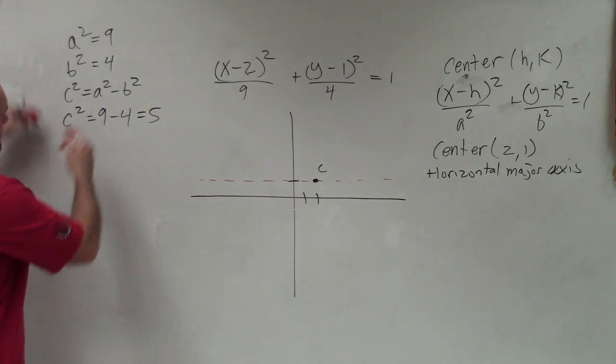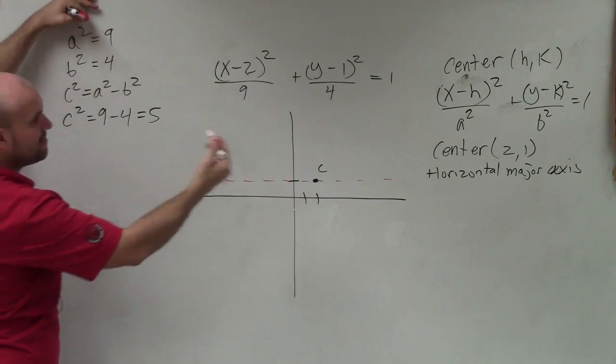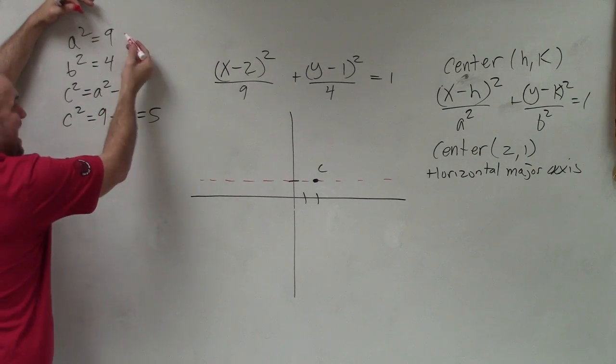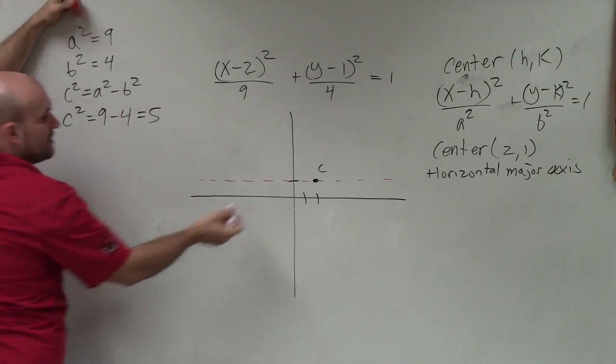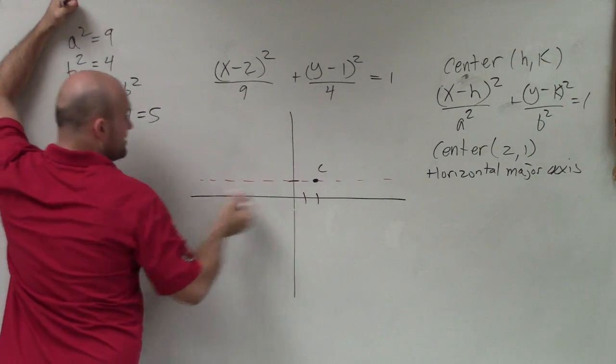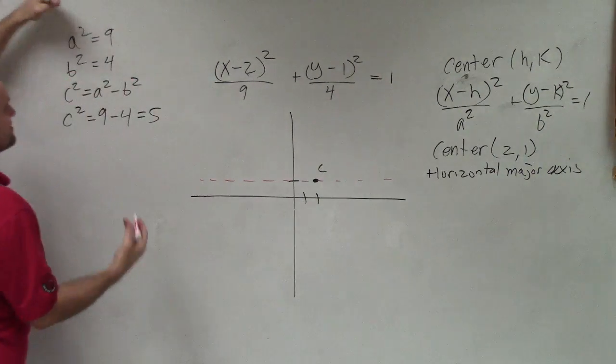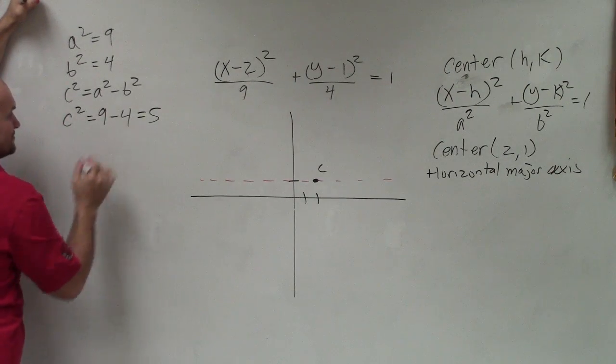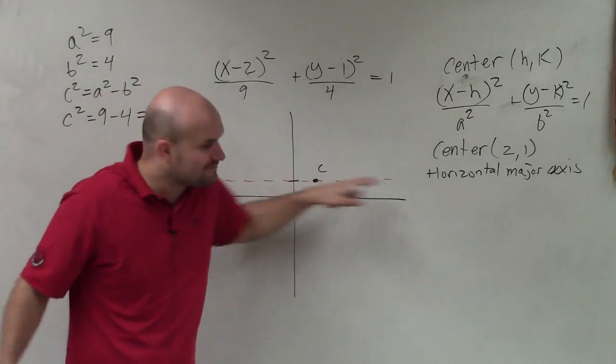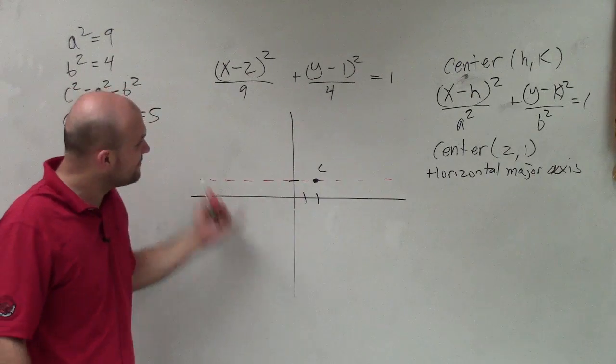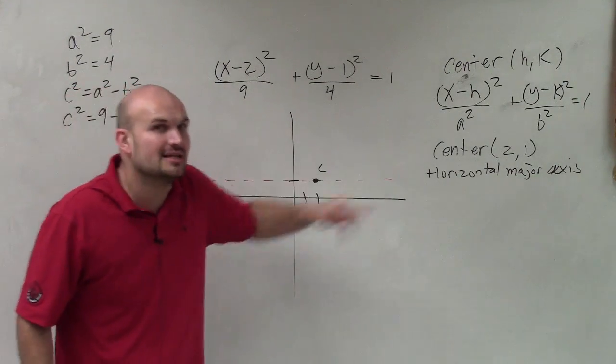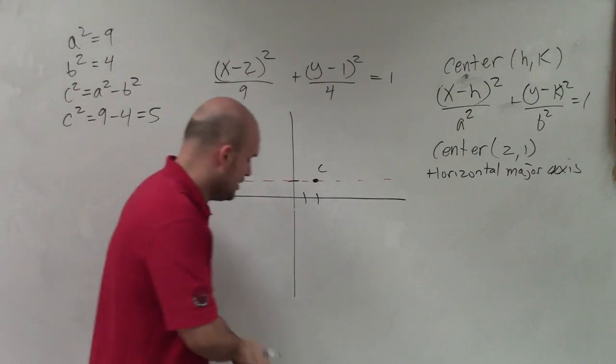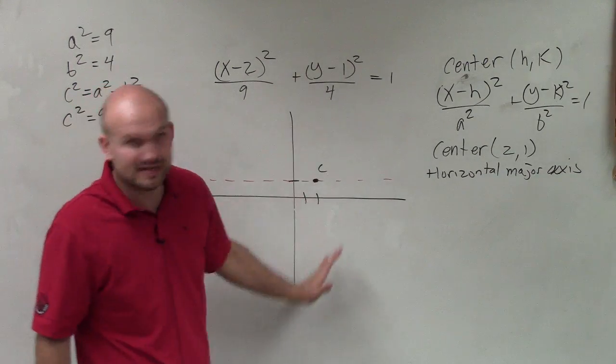Why that's so important is the distance from the center to the vertices is a. We notice if I want to find that distance, I'm going to be going left and right. The distance from the center to your foci is c, and I have to go along this major axis.